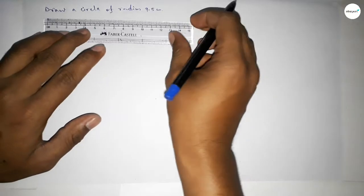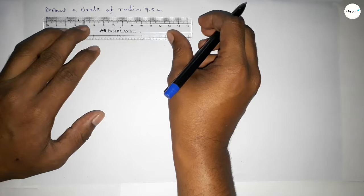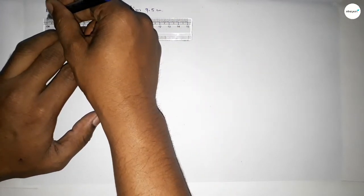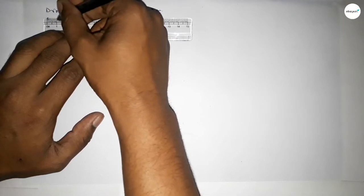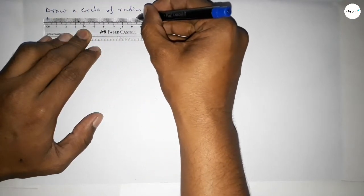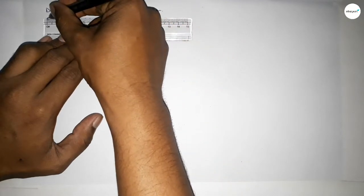Let's start the video. First of all, we have to draw the radius 9.5 centimeters. So this is starting 0, 1, 2, 3, 4, 5, 6, 7, 8, 9, and this is 9.5.